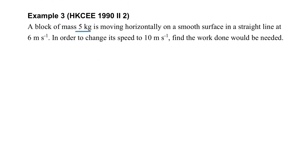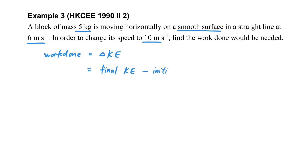Then if we move a block horizontally across a surface, changing its speed from 6 m/s to 10 m/s, how do we find the work done? It is just the change in kinetic energy — the final KE minus the initial KE. We can substitute the numbers directly to find out the work done. Make sure you are aware that the work done is the energy gained by the object.